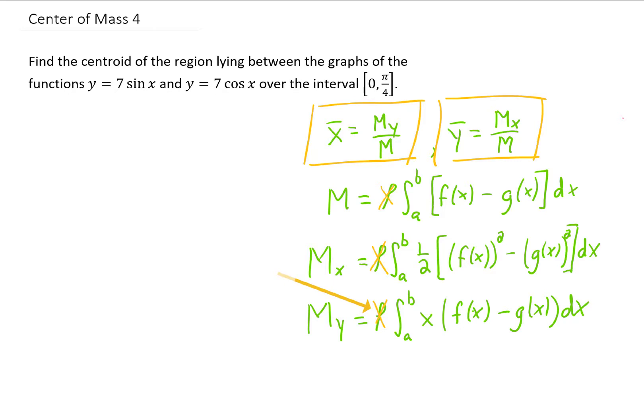Now, to start this problem, I'm going to do a really quick sketch. The cosine of x function and the sine of x function cross each other at x equals pi over 4, so you can see that the region that we're talking about is this one right here. The main thing to take from this drawing is the fact that 7 cosine of x is the top function and 7 sine of x is the bottom function. So we're going to call this one f of x and this one g of x.